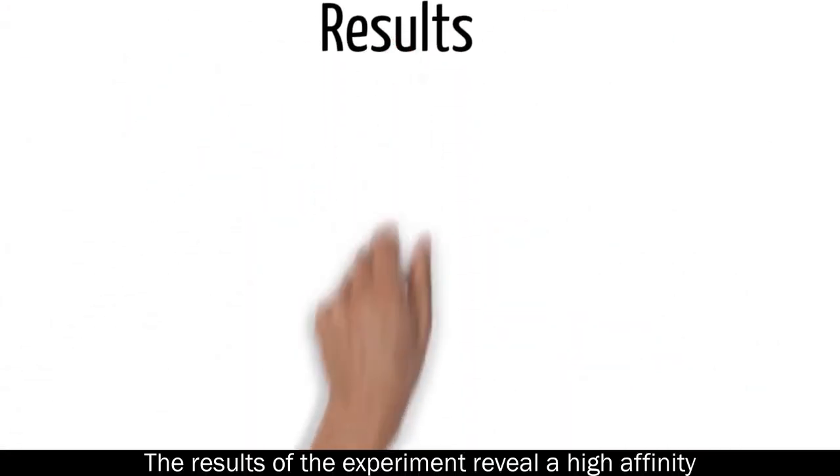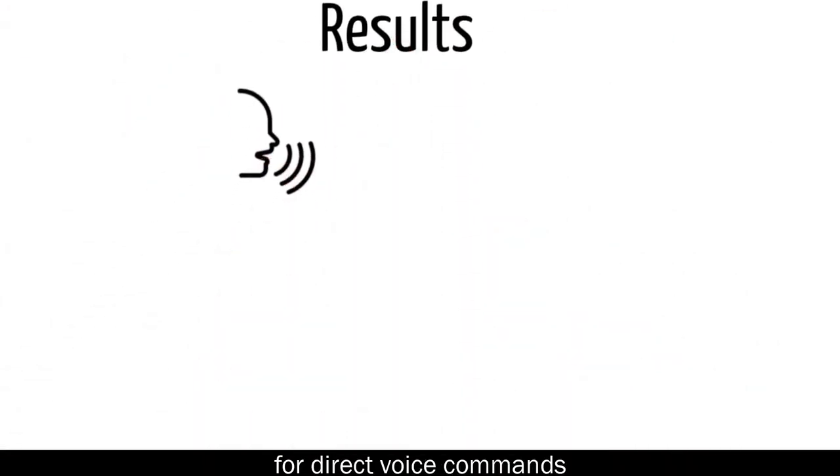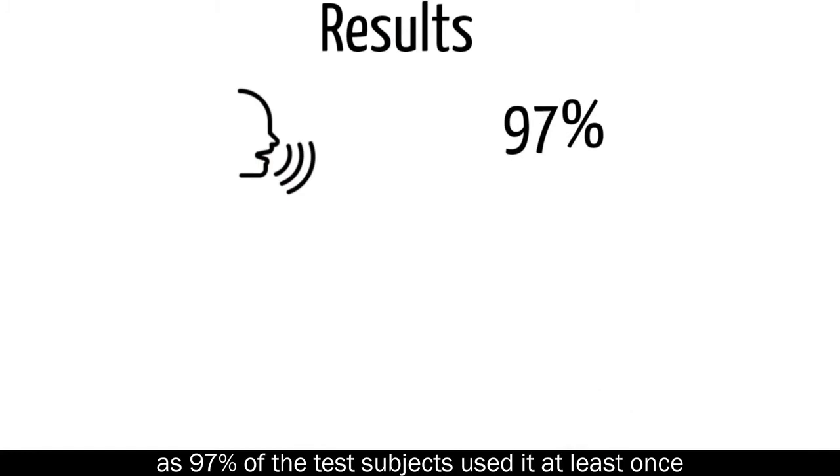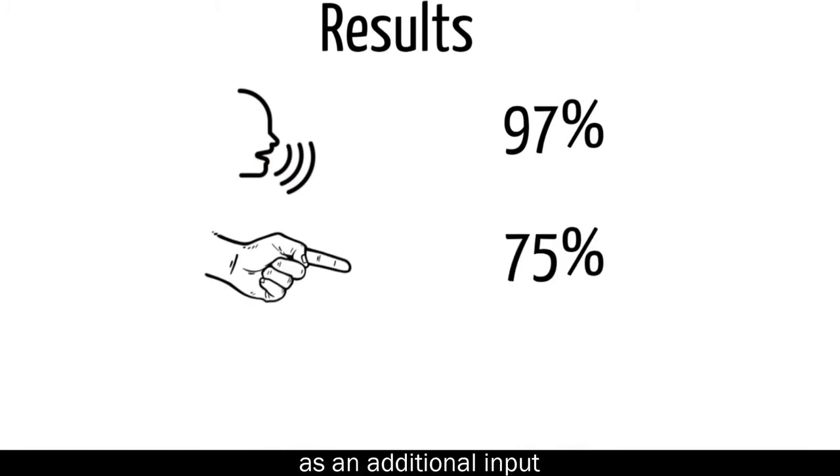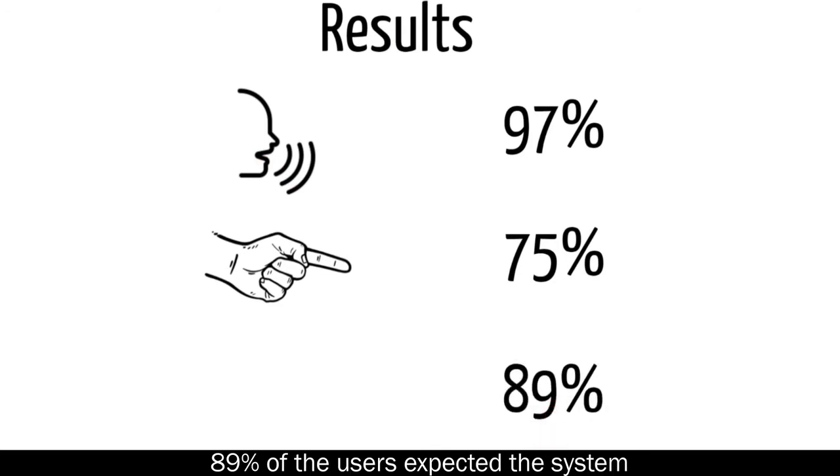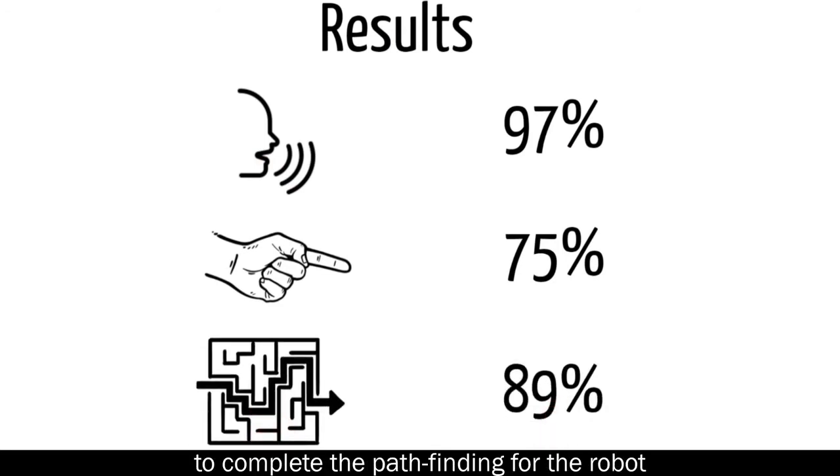The results of the experiment reveal a high affinity for direct voice commands, as 97% of the test subjects used it at least once. Most subjects also used pointing gestures as additional input. 89% of the users expected the system to complete the pathfinding for the robot, while fewer insisted to guide the robot manually.